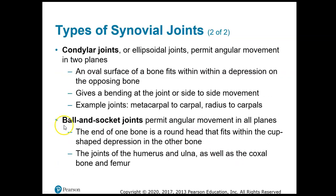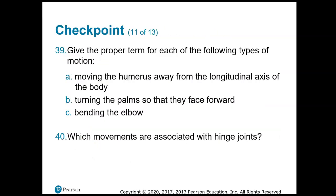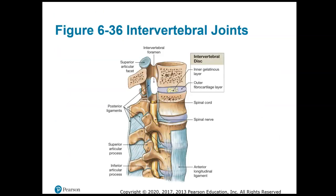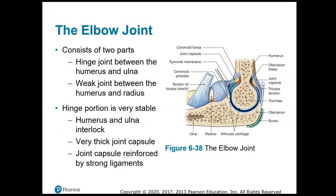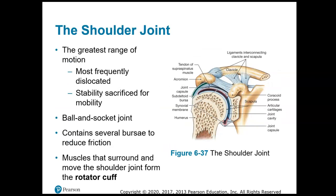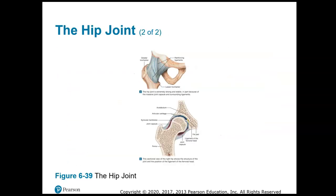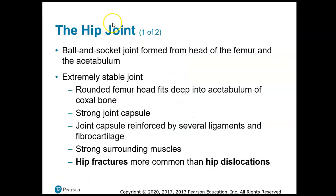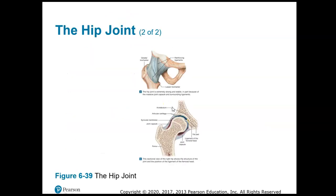We have two ball-and-socket joints: the hip joint and the shoulder joint. The shoulder joint is the most frequently dislocated joint and has the greatest range of motion of any of our joints — stability is sacrificed for mobility. The hip joint is an extremely stable joint, but doesn't have the mobility that the shoulder joint does.